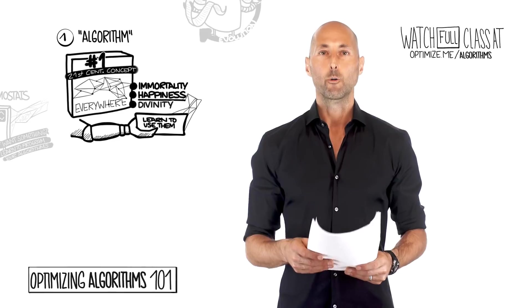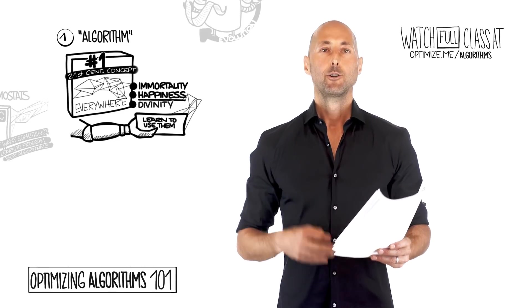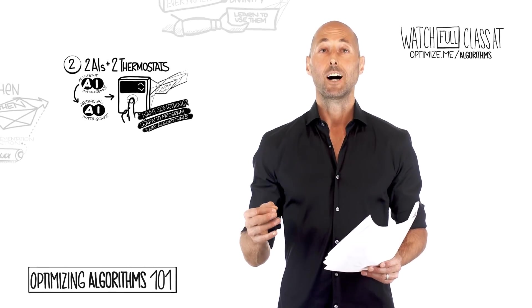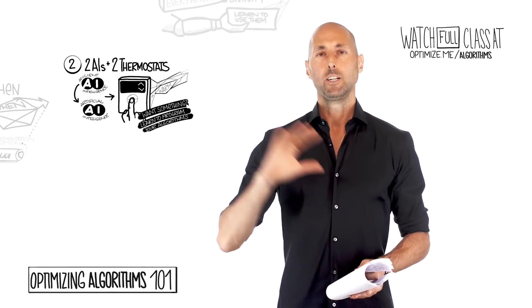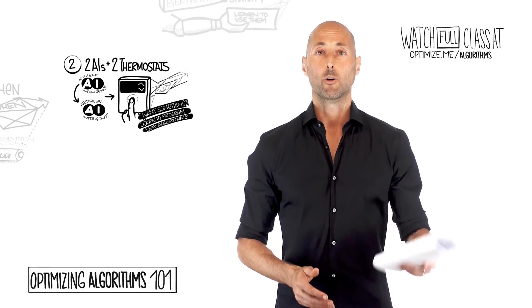Second big idea. Two AIs plus two thermostats. So you have Professor Harari, genius intellectual, telling us algorithms are important.